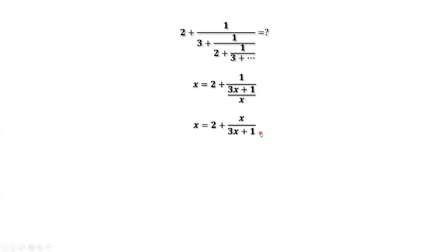Now, how to get rid of 3x plus 1? Both sides times 3x plus 1. Simplify both sides. We have 3x square plus x equals 6x plus 2 plus x.